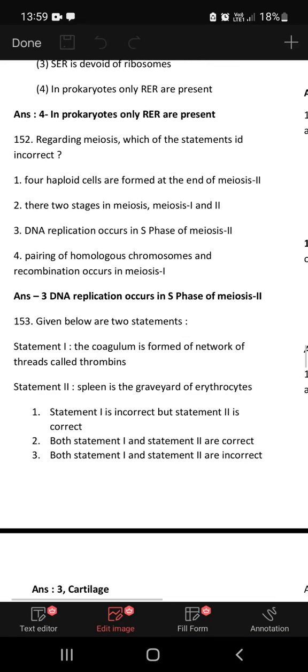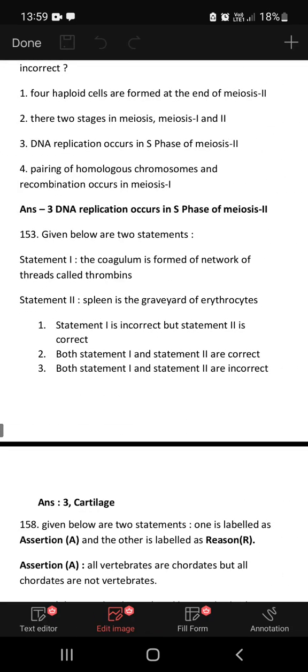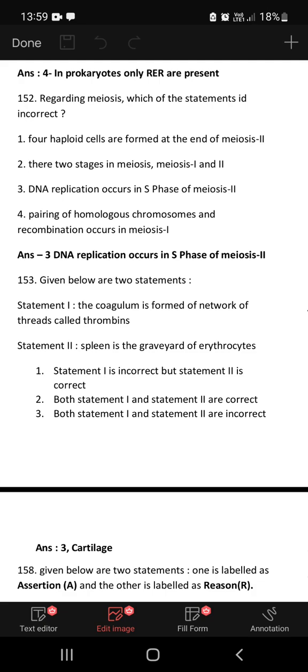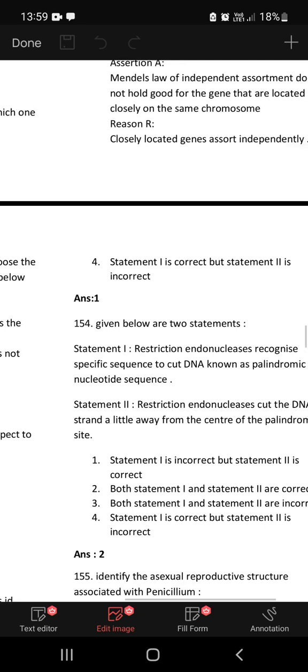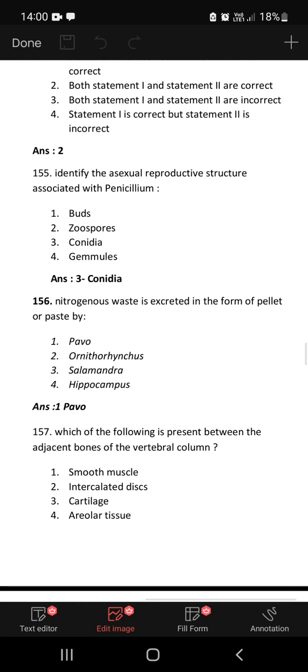Given below are two statements. Statement 1: The coagulum is formed of a network of thread called thrombins. Statement 2: Spleen is the graveyard of erythrocytes. The correct option is statement 1 is incorrect but statement 2 is correct. So that is the correct option for this question.